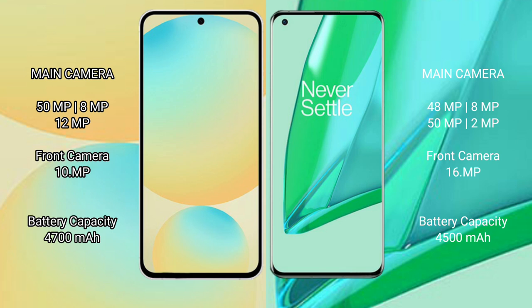OnePlus 9 Pro has a 16MP front camera. Samsung Galaxy S24 FE has a 4000mAh battery with 25W fast charging support. OnePlus 9 Pro has a 4500mAh battery with 65W fast charging support.